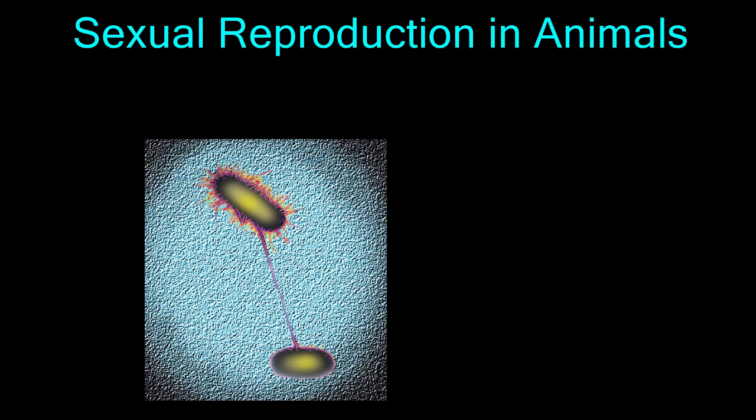A primitive form of sexual reproduction can even occur amongst unicellular organisms. This primitive form of sexual reproduction is called conjugation.